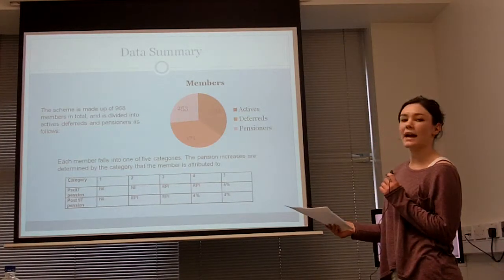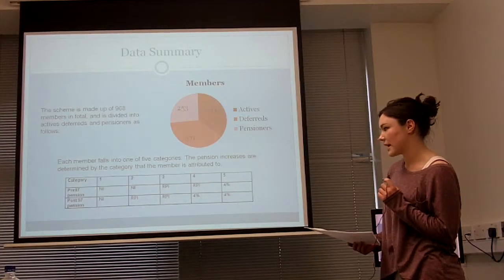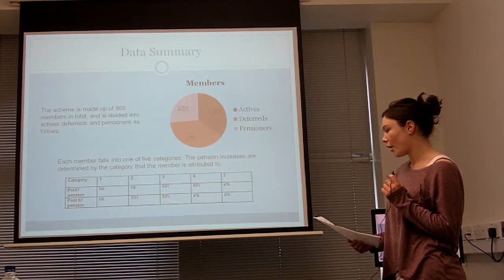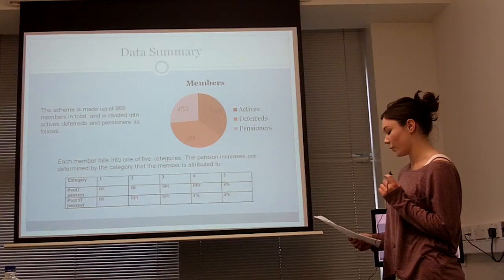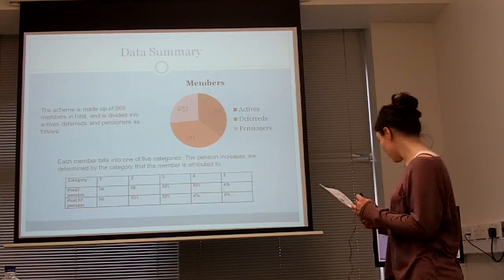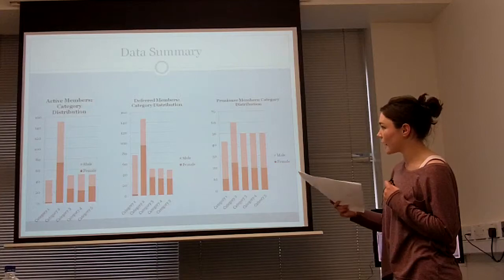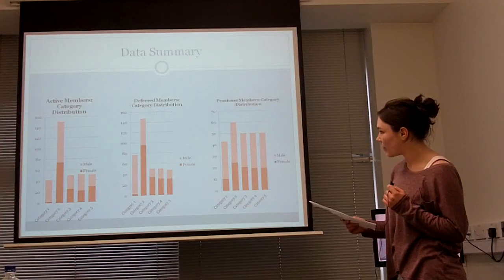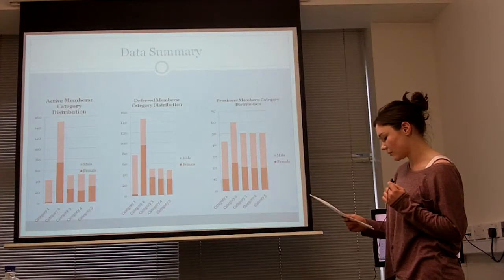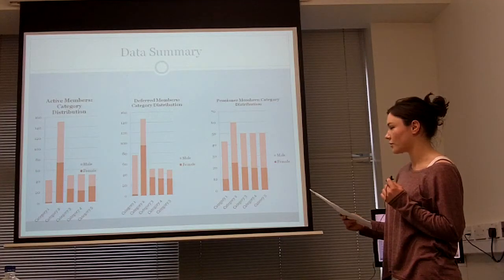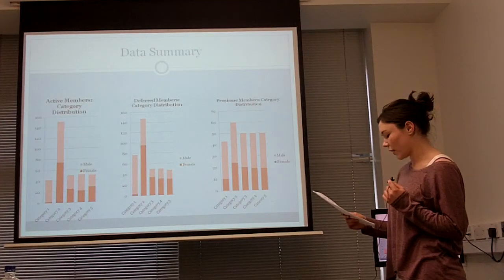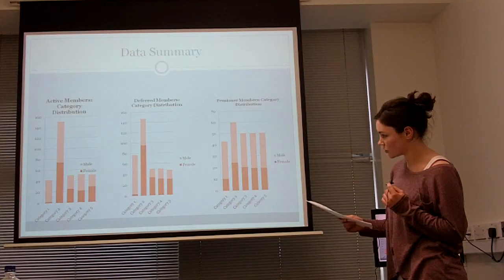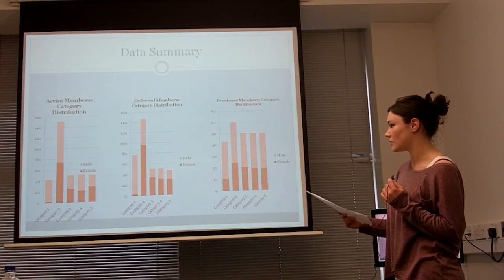As you can see on the table here, this is split into pre-97 and post-97 pensions, and it varies between 0% increases, RPI at 3% increases, and 4%. The next slide shows within the actives, deferreds, and pensioners the distribution of each category. In all three, category two has the highest number of members: 45% in the actives, 38% in the deferreds, and 24% in the pensioners. The graphs also show the distribution of males and females within each category.